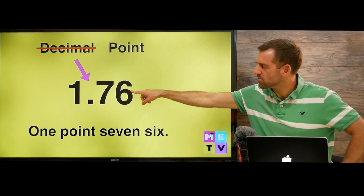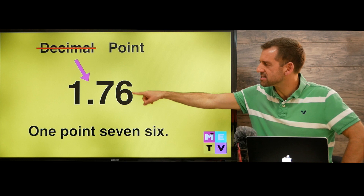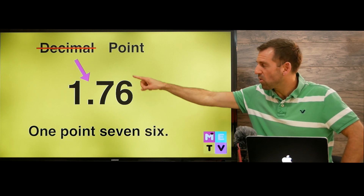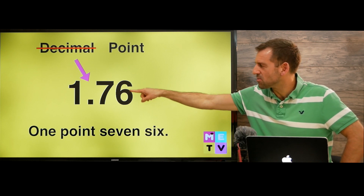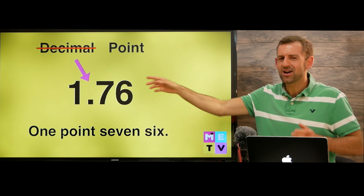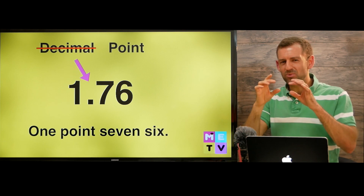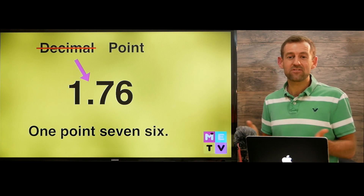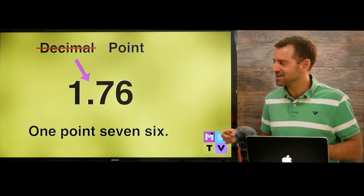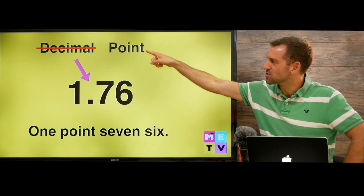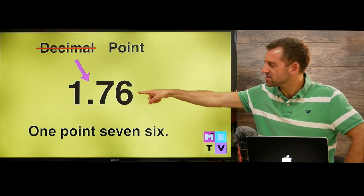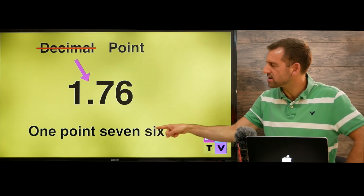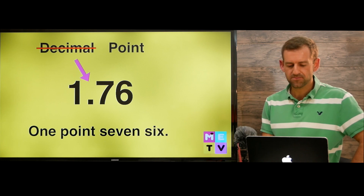So this number here is 1.76. It's not 1.76. So really, the word decimal in English is sort of useless because we never actually use it. We always use the word point — 1.76.